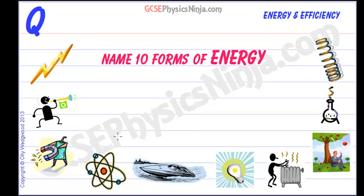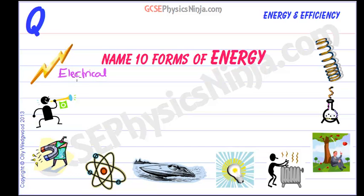Now we look at the different forms that energy can take, and there are 10 forms of energy. Let's start off with the first one, which is electrical energy. Then we've got a little guy blowing a trumpet, so this is sound energy.